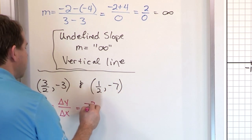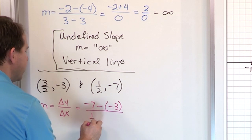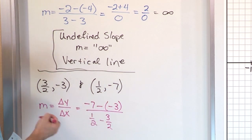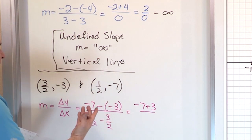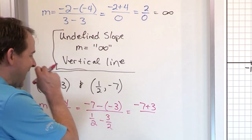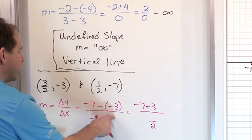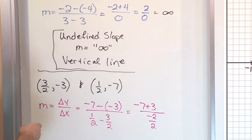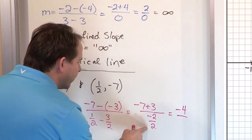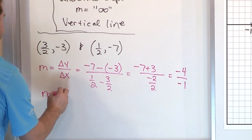So: negative 7 minus negative 3 (wrap it in parentheses) on top, and 1/2 minus 3/2 on the bottom. The numerator becomes negative 7 plus 3. The denominator is 1/2 minus 3/2 — they already share a common denominator, so it's (1 minus 3)/2 = -2/2 = -1. So we have -4 divided by -1, and negative divided by negative is positive. The slope equals positive 4.